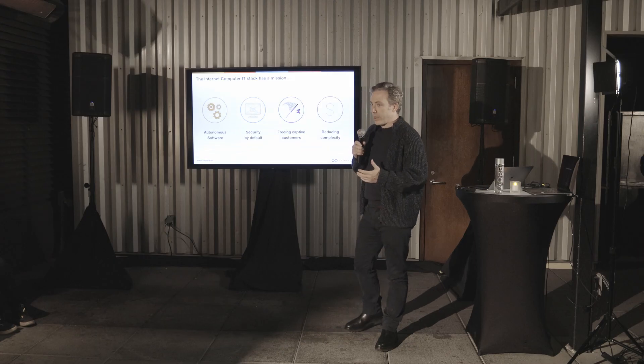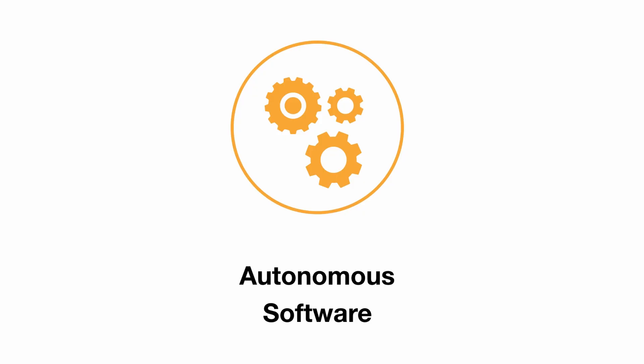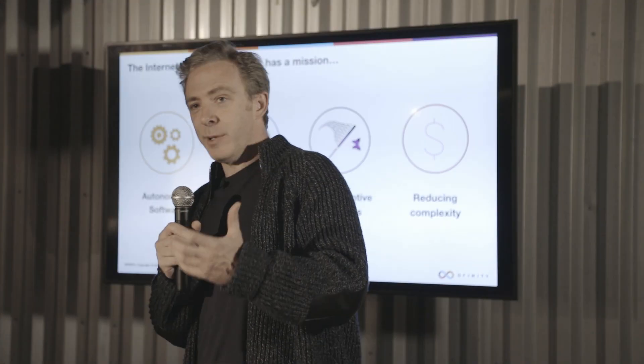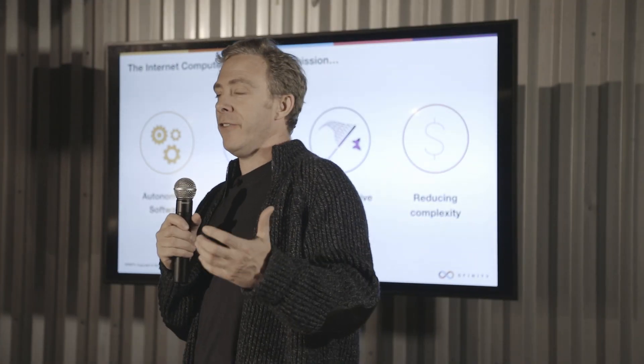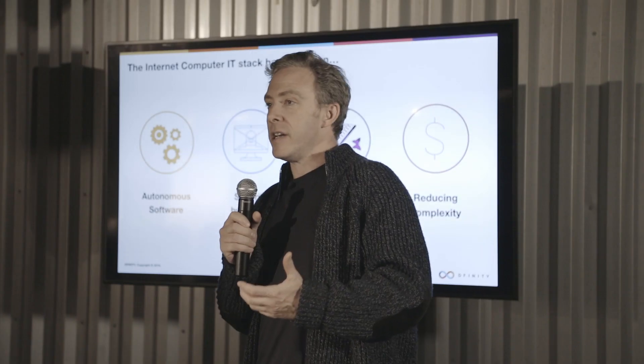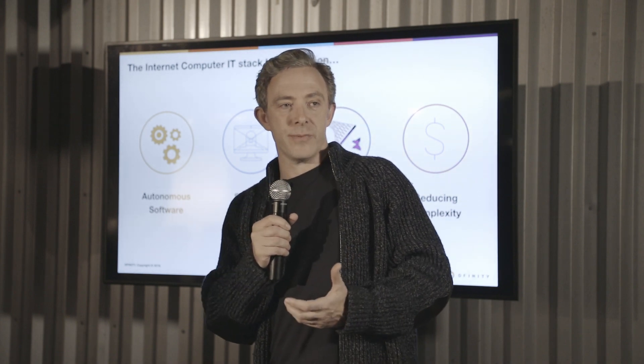First of all, we want to support autonomous software. Autonomous software is software that doesn't have an owner, that runs on the internet computer. We want to enable people to build systems that are secure by default. Software systems built on the internet computer come with the same kind of security guarantees that we've seen provided by smart contract systems.